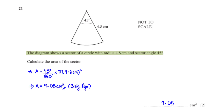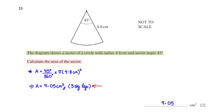The diagram shows a sector of a circle with radius 4.8 centimeters and sector angle 45 degrees. Calculate the area of the sector. The formula for the area of a sector is theta over 360 degrees times pi r squared. In this case, theta is 45 degrees and r is 4.8 centimeters. When we type this into the calculator, we get 9.05 centimeters squared rounded to three significant figures.